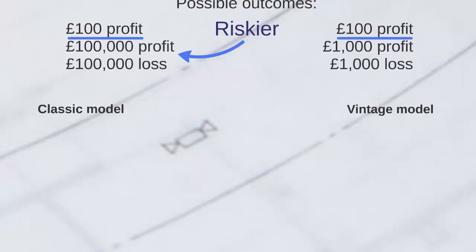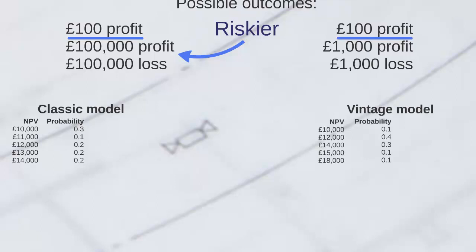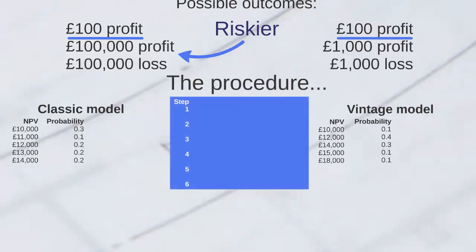Looking at the potential outcomes, the classic model has five potential outcomes with net present values of £10,000, £11,000, £12,000, £13,000, and £14,000, each with respective probabilities shown. The vintage model also has five potential outcomes. The first thing we need to do when calculating our standard deviation is to calculate the expected value, which for all intents and purposes is the average outcome. We face a problem here: we can't simply add up the five outcomes and divide by five because there are different probabilities.